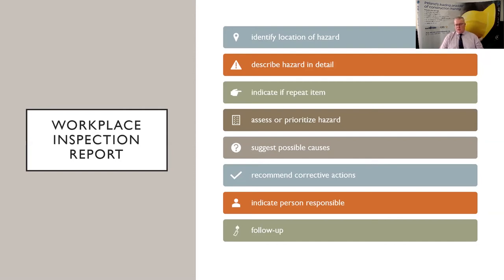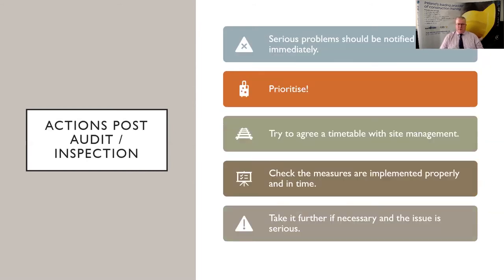Give them a timeline — if it's something you want done in an hour or within the day, make sure you follow up with that individual to close it out. When you've completed your walk around, any serious problems need to be notified immediately. Other items of lower risk need to be prioritised for action in discussion with the team on site. Agree a timetable with site management for completion and check that the measures are implemented properly and in time. When you come back for your next audit, you don't want to see those issues turning up again.